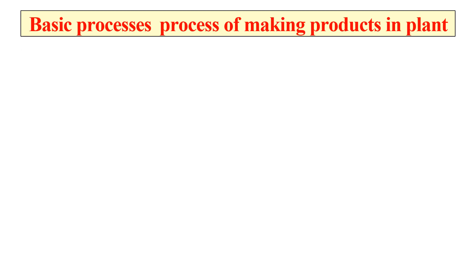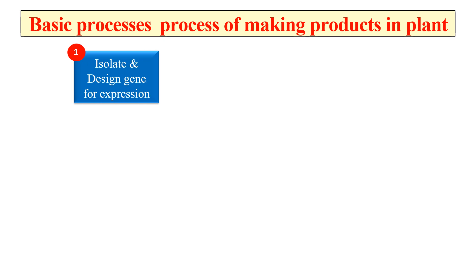Now, the basic process of making a product in plants. The first step is to isolate and design the gene for expression — we isolate the gene for the product we want to make, since we are talking about transgenic plants in which foreign genes are transferred. We design a gene construct so it can express inside the plant, by adding a promoter, translational activating signals, start codons, and initiation codons — all the expression elements incorporated into the design.